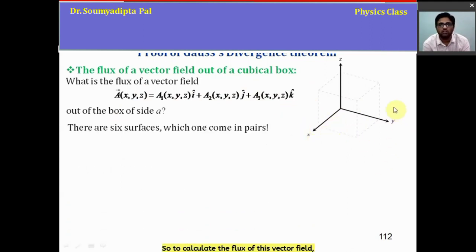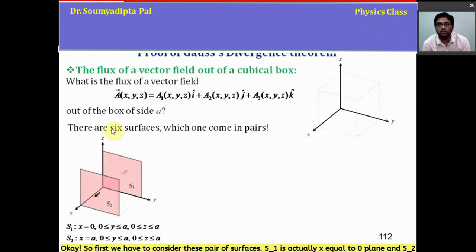Now there are six surfaces on the box. To calculate the flux of this vector field, we have to understand which surfaces contribute in pairs. So first we have to consider this pair of surfaces: S1 is actually x equal to 0 plane and S2 is x equal to A plane.